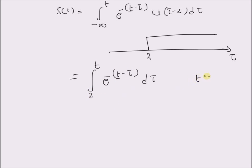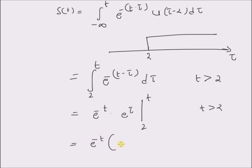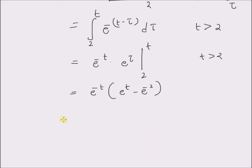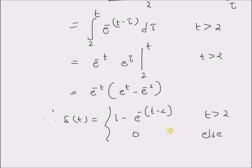This will be non-zero only when t > 2, because there will be no overlap when t < 2 — that is, the integrand falls outside u(τ-2). Therefore, this is non-zero only for t > 2. Evaluating the integral: e^(-t) · e^τ from 2 to t gives e^(-t) · (e^t - e^2), so s(t) = 1 - e^(-(t-2)) for t > 2, and 0 elsewhere.